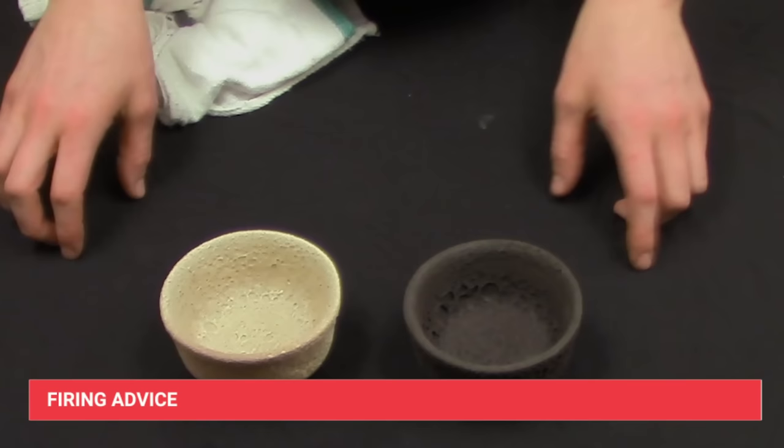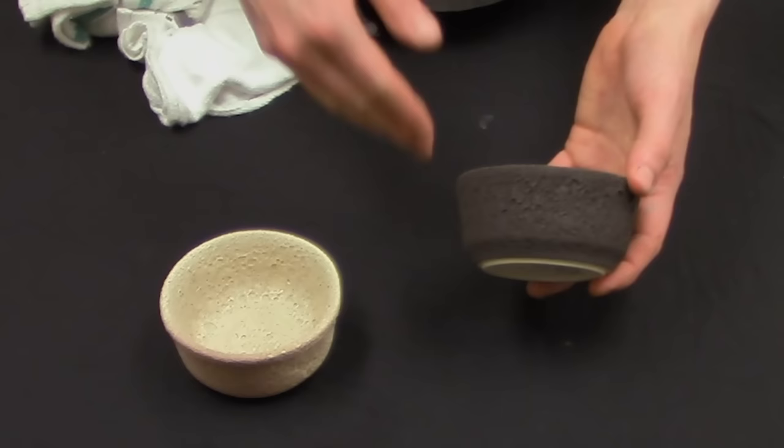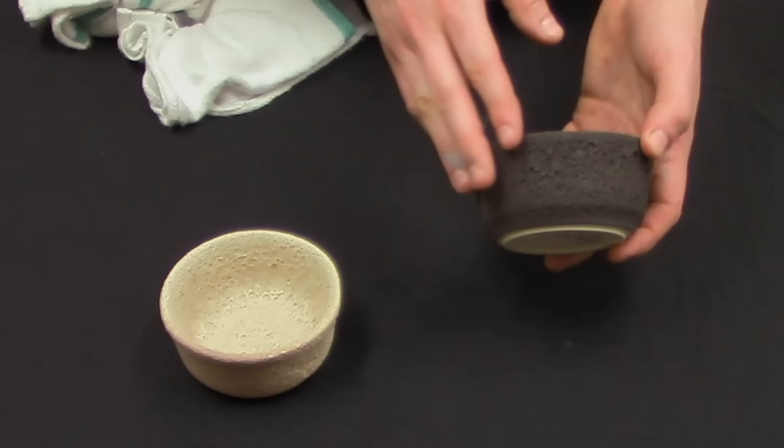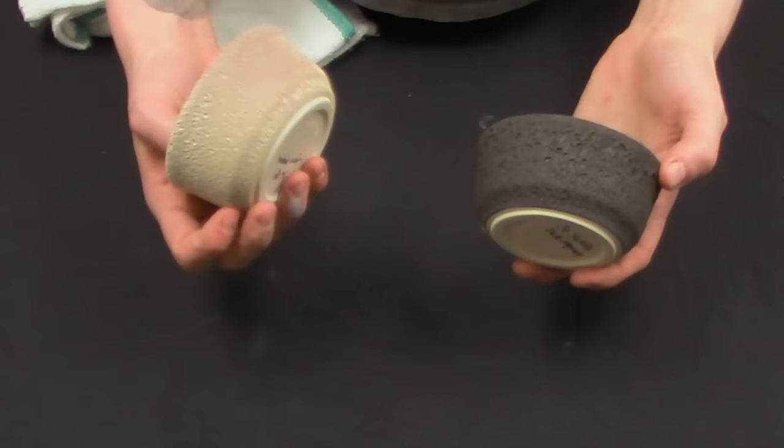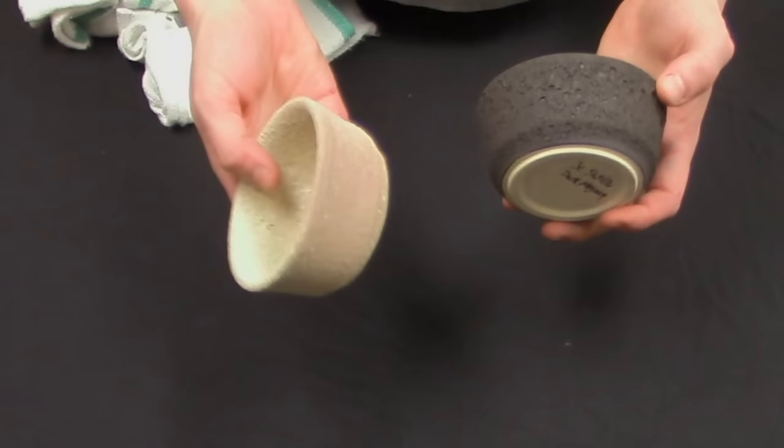Some firing advice for the magma glazes. When you're firing the dark magma, we would recommend to place it on a shelf by itself or possibly put a kiln brick between the dark magma piece and the other pieces. Here we have a light magma ramekin that was fired close to the dark magma. And as you can see, there is some fuming that occurred.